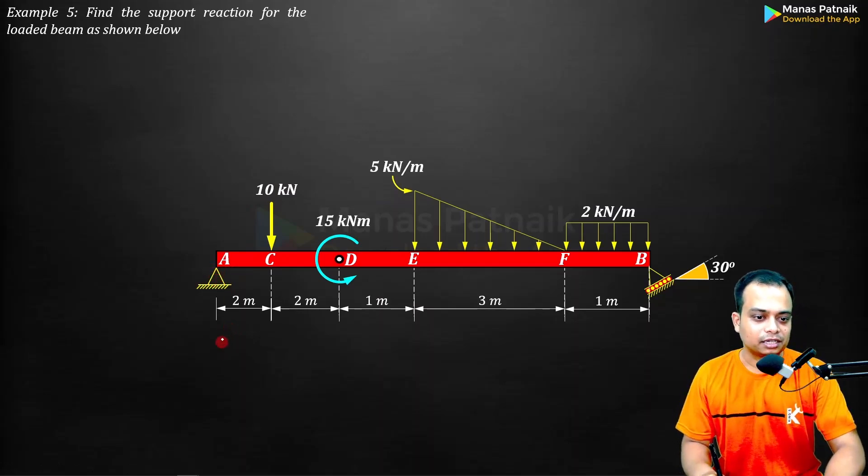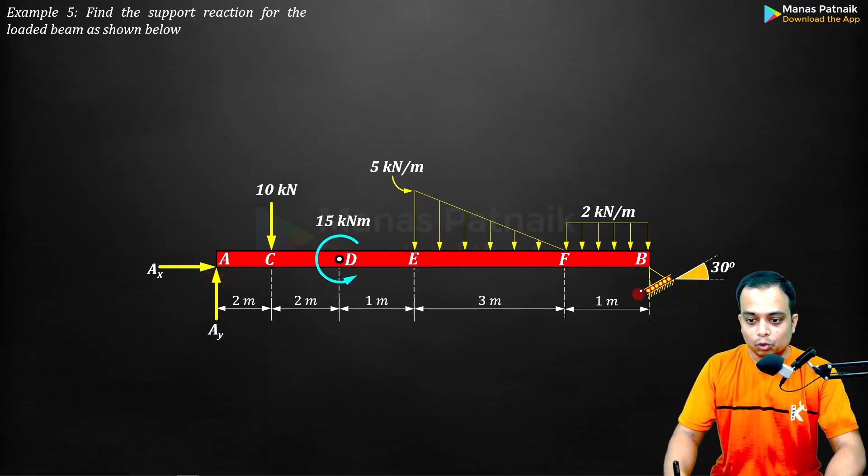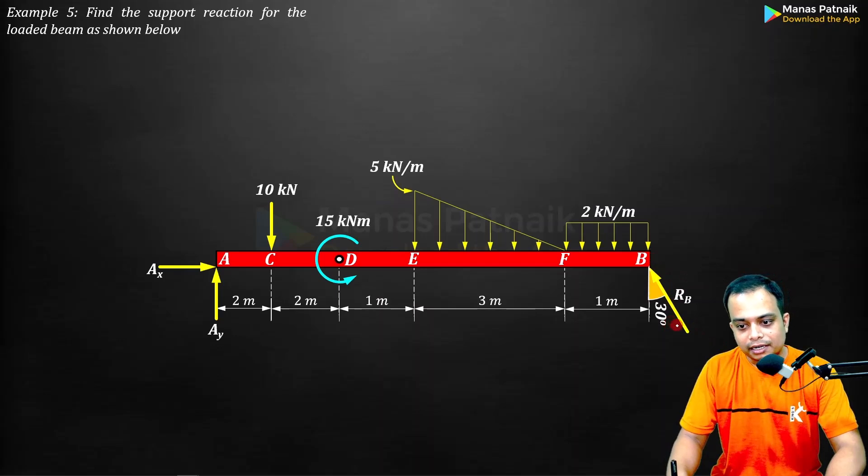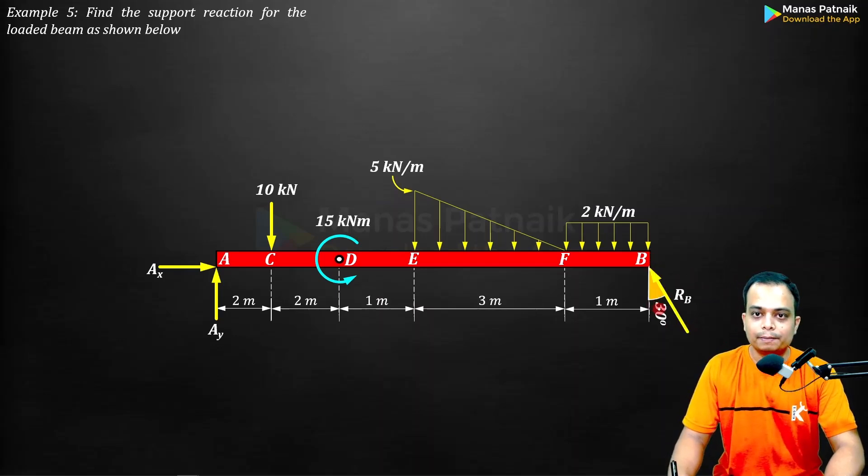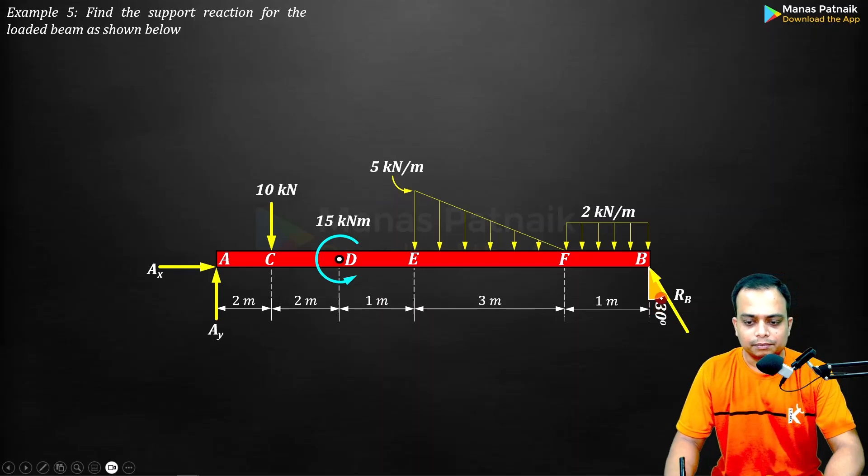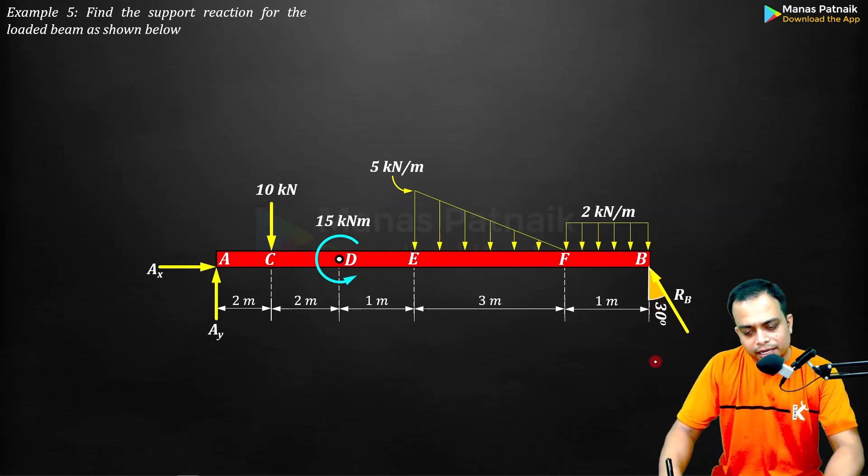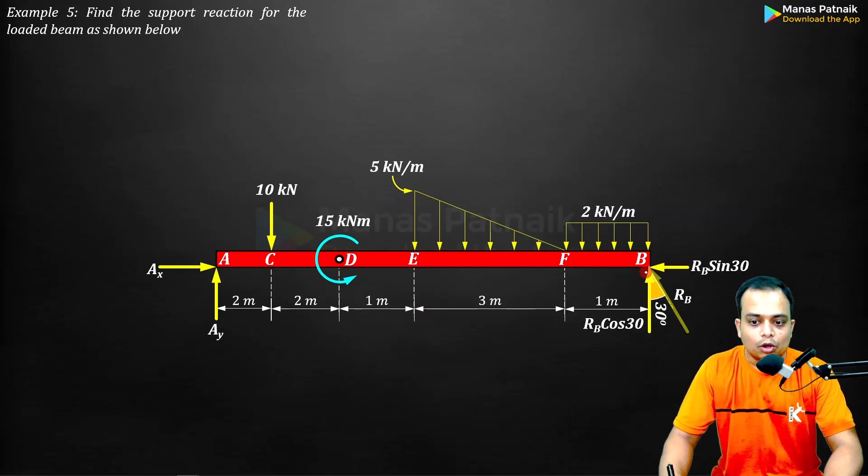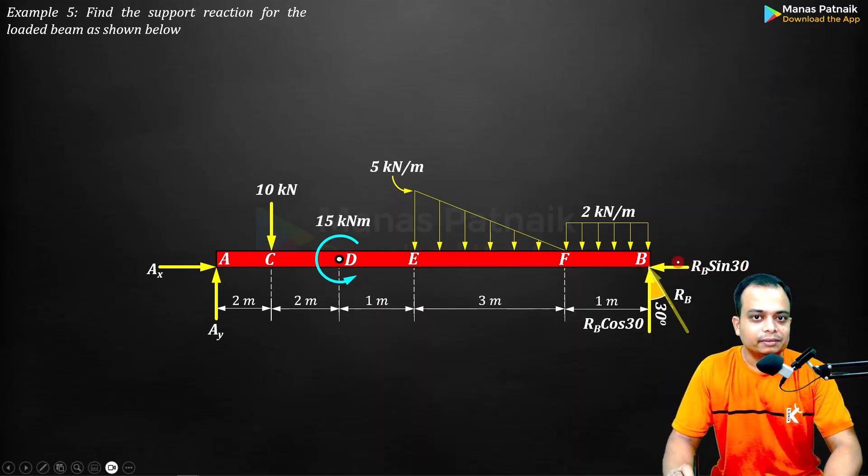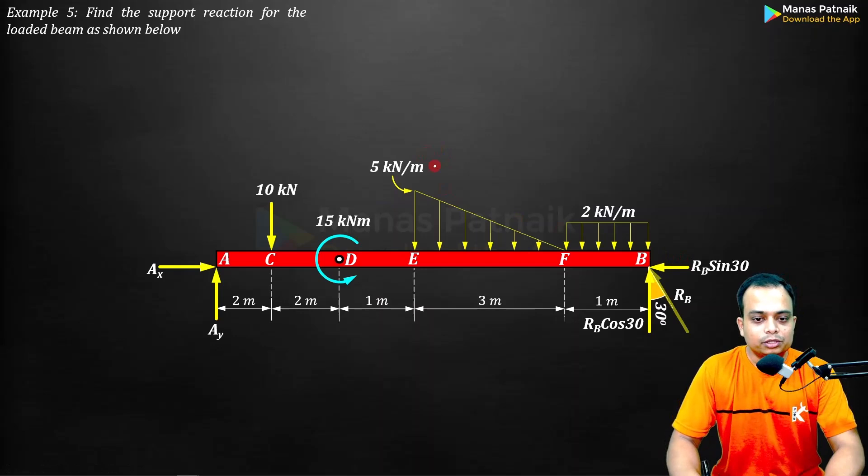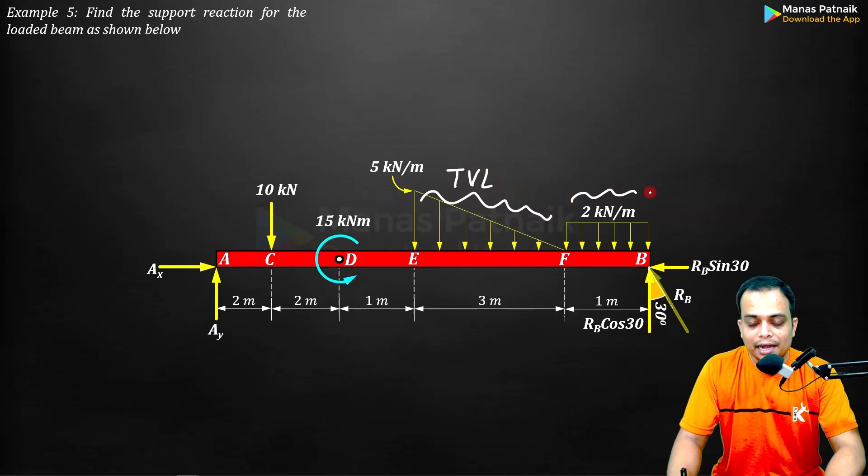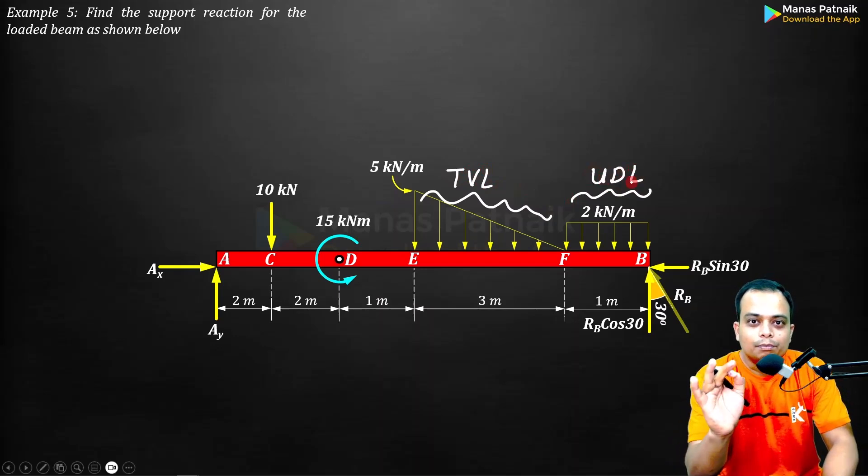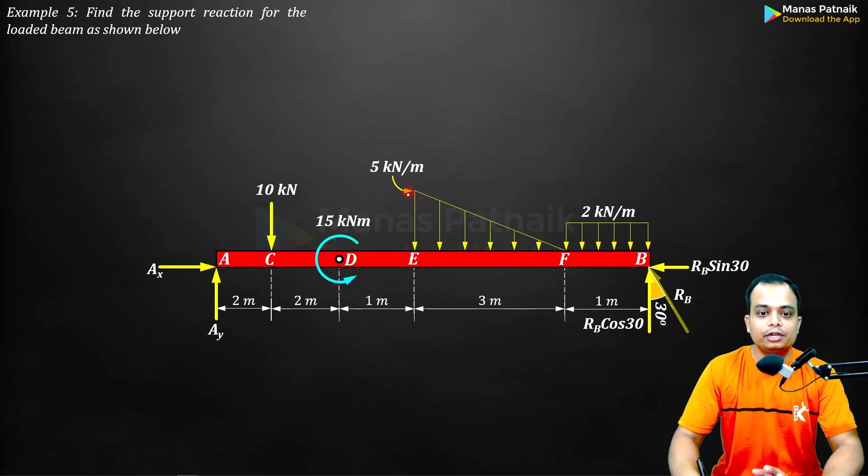First thing to do immediately is to remove this support and replace it with appropriate reactions Ay and Ax. The roller support can be replaced with the reaction RB and that eventually is making an angle of 30 degrees. If this is RB, we know that its component here is going to be RB cos 30 and here the component is RB sin 30. The next thing to do is to transform these triangularly varying loads and this uniformly distributed load into point loads.